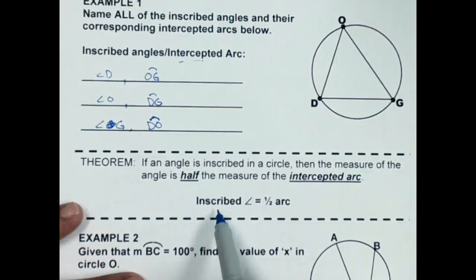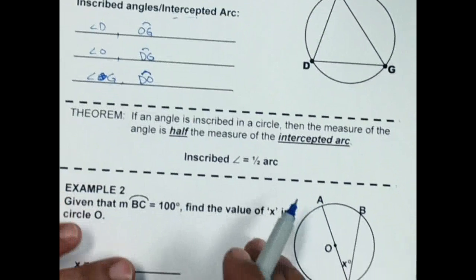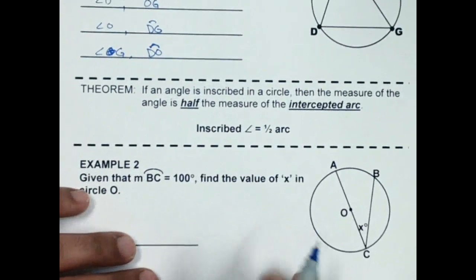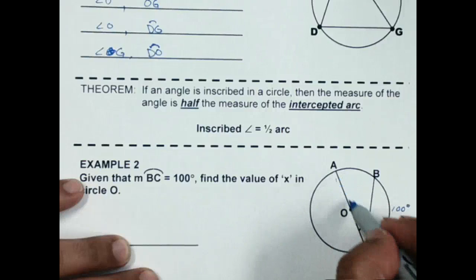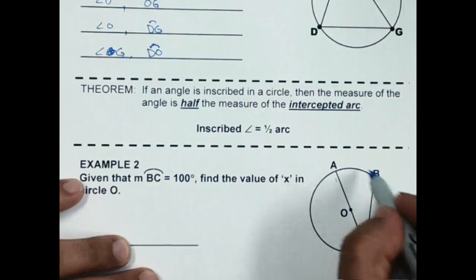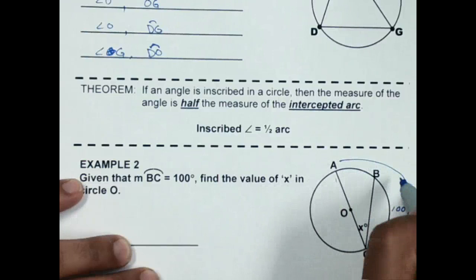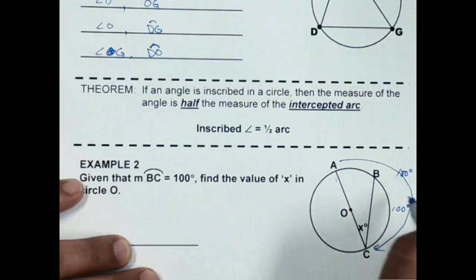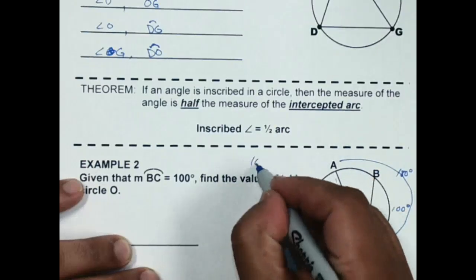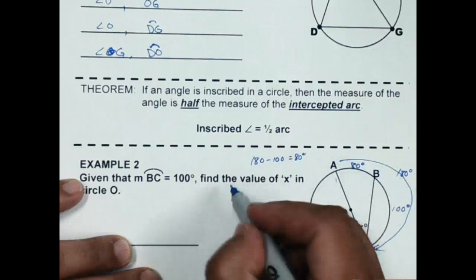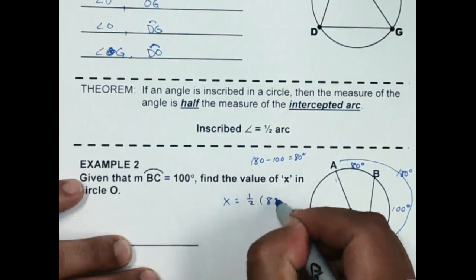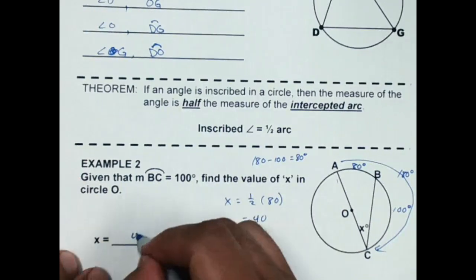Remember that the inscribed angle is half the arc. Looking at this problem, arc BC is 100 degrees. Notice that AC goes through center O, so from A all the way to C that's 180 degrees. Arc AB, which is the intercepted arc of angle C, is 180 minus 100, which is 80 degrees. So X is going to be half of 80 degrees, which comes out to 40. X equals 40 degrees.